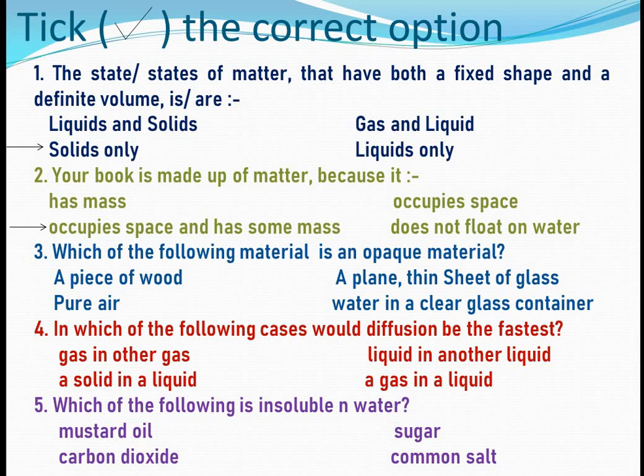Third: which of the following materials is opaque — a piece of wood, pure air, a plain thin sheet of glass, or water in a clear glass container? The answer is a piece of wood.